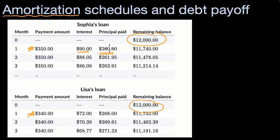This $260 that goes to principal is literally taken from the balance. That $12,000 initial loan was not only the remaining balance but also what you could view as the principal of the loan. So you have to pay some interest because they're charging you to borrow that loan, but some of that payment is paying down that loan. Notice: $12,000 minus $260 is exactly $11,740.